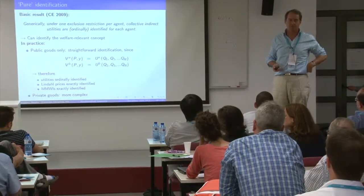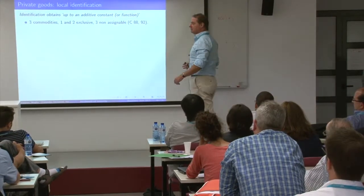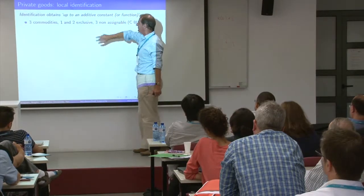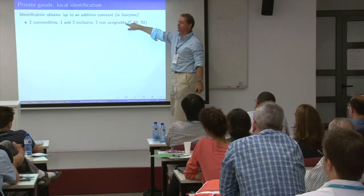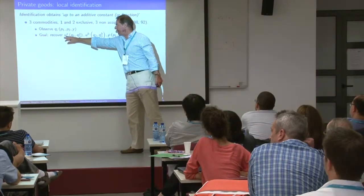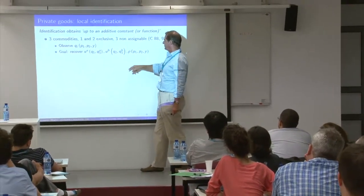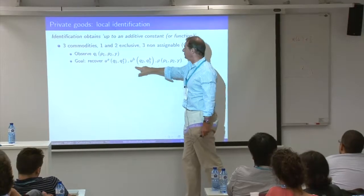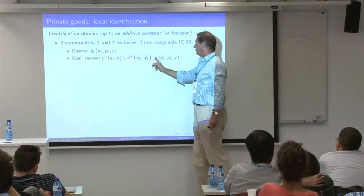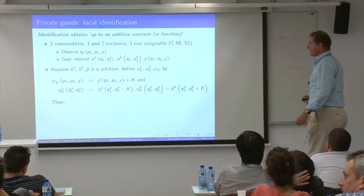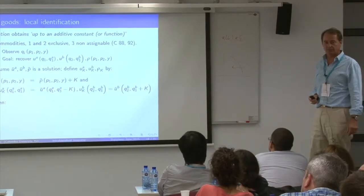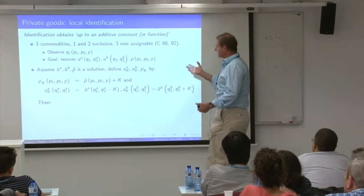The problem is really with the non-assignable private goods. Let me take the simplest example. I have three commodities: one consumed exclusively by person A, two exclusively by person B, and three consumed by both but I don't observe individual consumption. I want to recover the utility of A, the utility of B, Q3A and Q3B that I don't observe, and the sharing rule. The answer is: this is not identified. The best I can do is identify up to an additive constant.